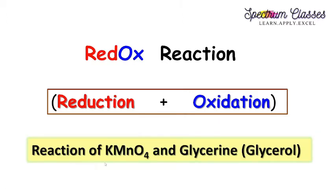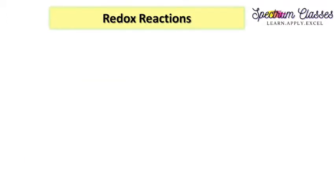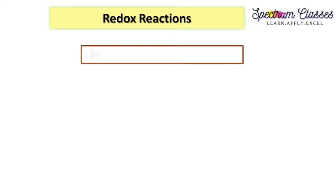We will explain this redox reaction in reference to the reaction of KMnO4 versus glycerine. This glycerine is also known as glycerol, and its IUPAC name is propane-1,2,3-triol. These two names refer to the same compound. Let's start with the redox reaction here.